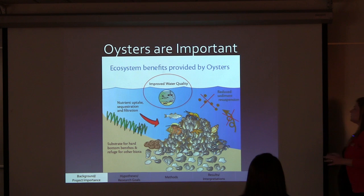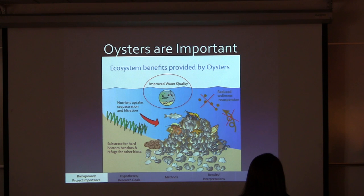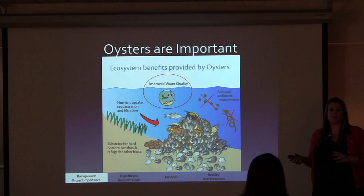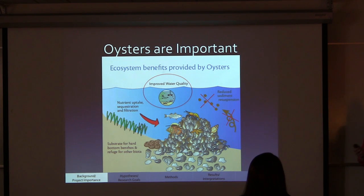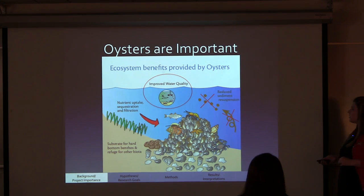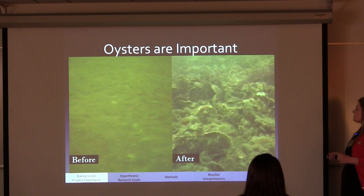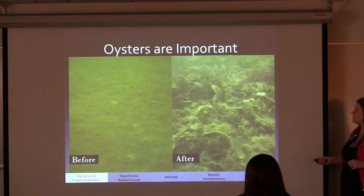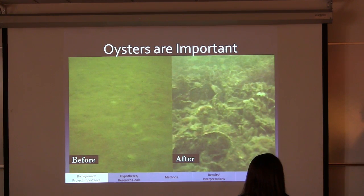All of this leads to improved water quality, which is why oysters are very important to us. An adult oyster can filter up to 48 gallons of water a day, so in large numbers they provide much clearer, improved water quality. They also help bring in more organisms, contributing to greater biodiversity along our coast. Here is an image showing before and after oysters filter the water — you can see really murky water becomes much clearer.